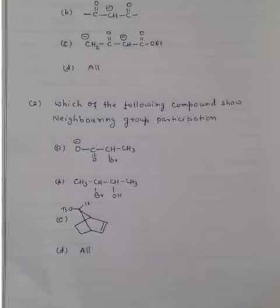Now, which of the following compounds show neighboring group participation? You can see here, we have four options: Option A, option B, option C and option D.